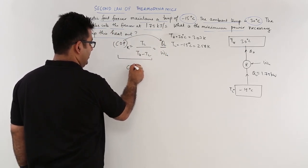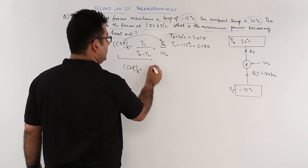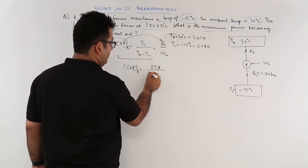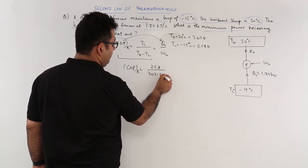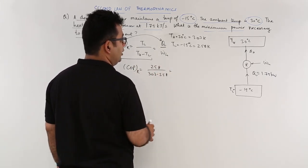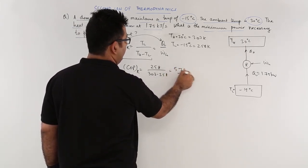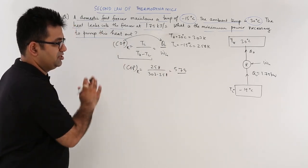So COP of a refrigerator is equal to TL which is 258 upon 303 minus 258, and that comes out to be 5.73. So this is the COP for this freezer.